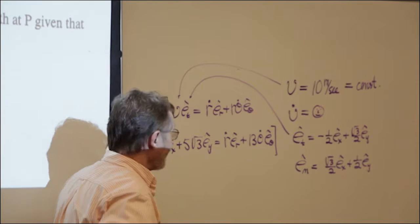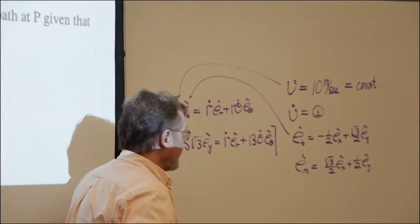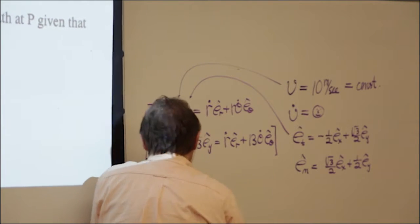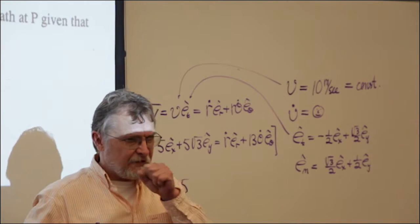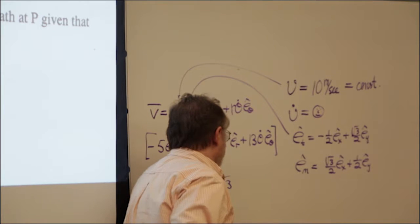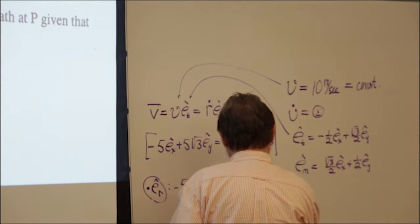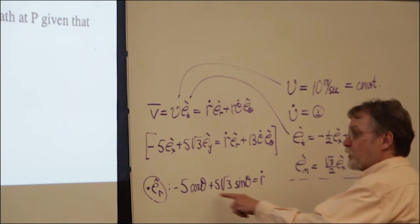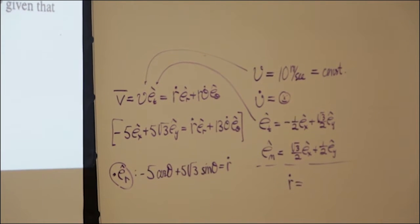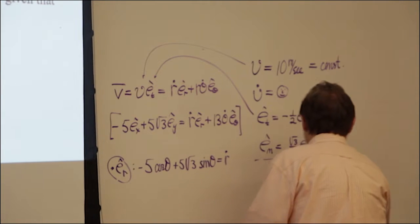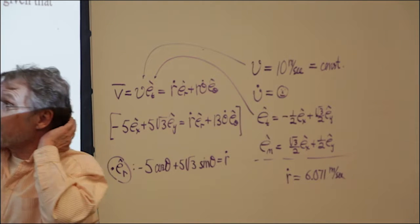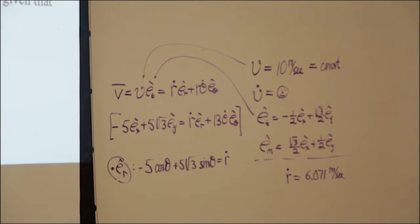Dotting both sides with e_r gives: minus 5 (e_r · e_x) plus 5 radical 3 (e_r · e_y). Substituting the values 5/13 for cosine and 12/13 for sine and solving, r-dot turns out to be about 6.071 meters per second — positive. So r is getting bigger, meaning the particle is moving further from the z-axis, which makes sense visually.